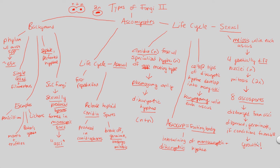Look how much more complex this life cycle is versus the asexual life cycle. Why would you ever do this? If the environment is crazy, if things are not stable, do the same old fast asexual reproduction. But if things are constantly changing, you should try to change as well — become genetically different and do this process of sexual reproduction. This is nicely summarized in figure 31.16. Take a look at the previous video on reproduction if you don't understand the steps, and that's it for ascomycetes.